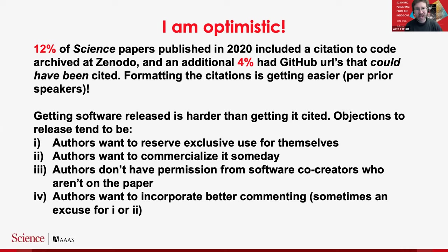An additional 4% had a GitHub URL they could have cited but didn't because it was embedded in the text somewhere. Formatting citations is getting much easier — as you just heard — and I think we benefit a lot from the fact that so many people already use GitHub. Once there's a seamless process for turning your GitHub repo into a citation, from our perspective at Science and many other publishers I've talked to, if you are getting everything in GitHub cited then that's a big proportion of what you want cited in the first place.